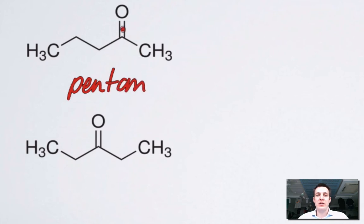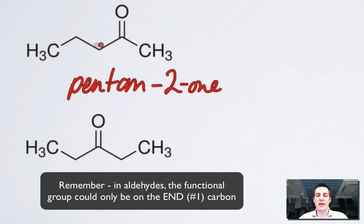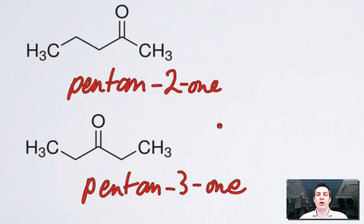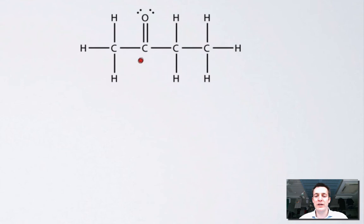Bear in mind, unlike an aldehyde, a ketone could be anywhere in the middle of the chain. This ketone also has five carbons, so it's also called pentanone, but if I specify where the ketone is, it's now on the third carbon, so pentan-3-one. This molecule has four carbons and a ketone group, so I'd call it butanone.